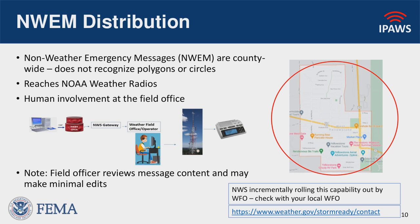Next, we have NWEM distribution, or non-weather emergency messages. This is county-wide. The WEA is the only pathway where you can constrain to a polygon; the NWEM, as well as the EAS, will go to the county. When you select the NWEM pathway, it sends to NOAA weather radios. As it goes through IPAWS Open, it will reach the NWS gateway where a field officer can make minimal edits before sending it out to reach radios within that county area.